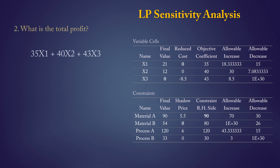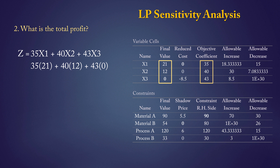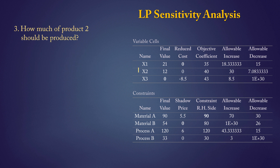In question 2, we want to determine the total profit, which is the objective function value Z at optimal solution. The objective function coefficients are found in the output, and substituting x1, x2, x3 at optimal solution results in a total profit of 1215. For question 3, the amount of product 2 to produce is found under final value to be 12 units. Since the reduced cost for x2 is 0, it indicates that product 2 is being produced at its most efficient level given the current constraints.